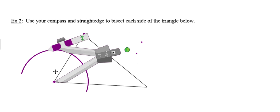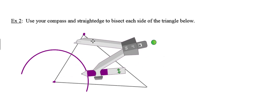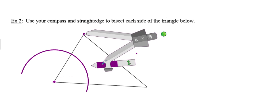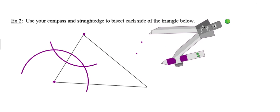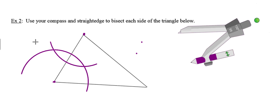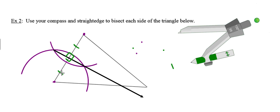Keeping the compass setting the same — that's very important — I'm going to flip my compass around and place the point at the other endpoint and construct a second arc. Getting the compass out of the way, I'll draw the perpendicular bisector. You can make this perpendicular bisector as large or small as you want. All the angles where the perpendicular bisector intersects the segment are right angles, the two pieces of the segment are congruent, and that intersection point is the midpoint of the left side of the triangle.